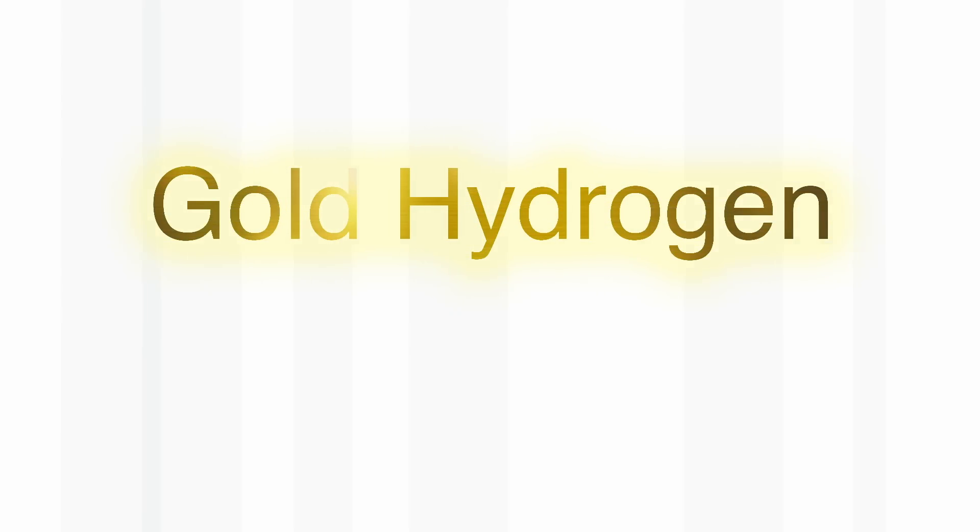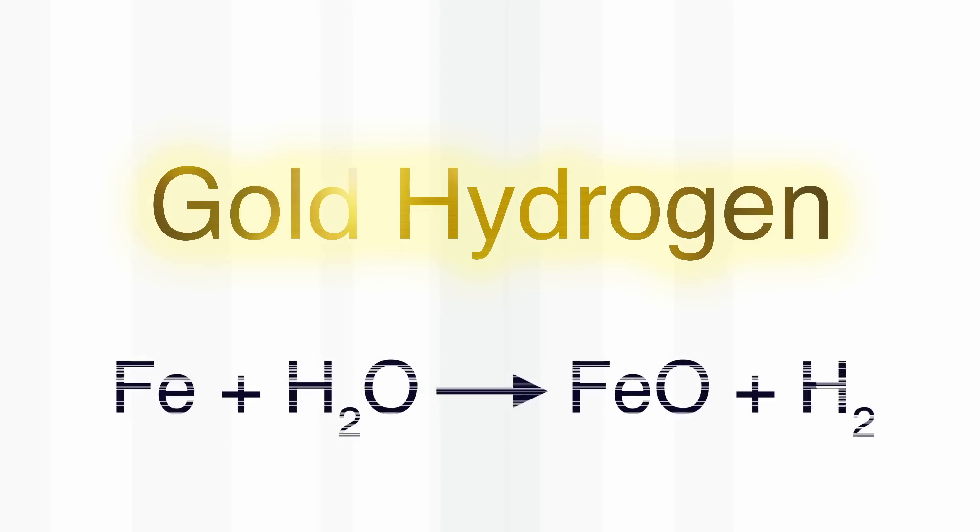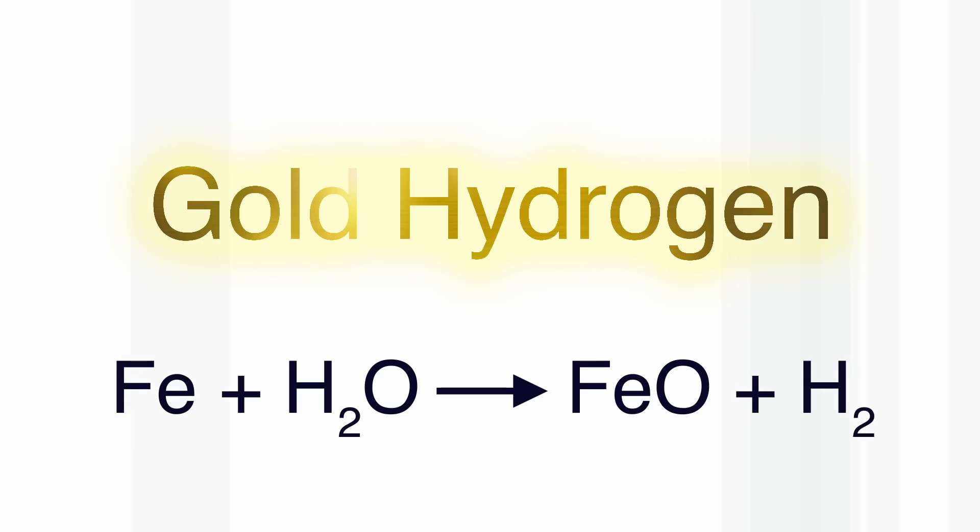Now the thing that really excited Brady was gold hydrogen. And gold hydrogen is very rare. This is naturally occurring hydrogen that you can find in deposits under the ground. You drill a hole and out comes hydrogen. And that is produced by very hot steam generated by the heat of the earth reacting with a metal such as iron in minerals, so that you get iron oxide and hydrogen.